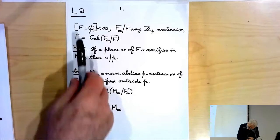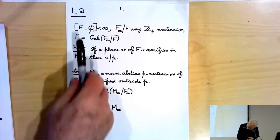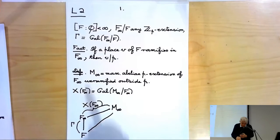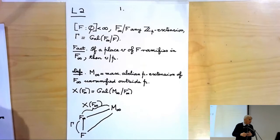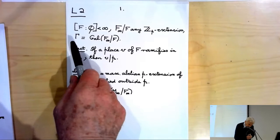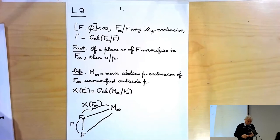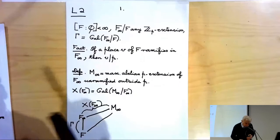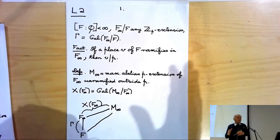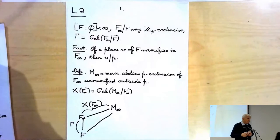What I want to assume — I hope that's clear to everyone — I've got F will be an arbitrary finite extension of Q, and F∞ at the beginning will be any ZP extension of Q. Only later will I assume that it's a cyclotomic one. And as usual, gamma will be the Galois group of our extension. I want to mention this important fact: the only places of F which can ramify in F∞ must be the finite places dividing P.